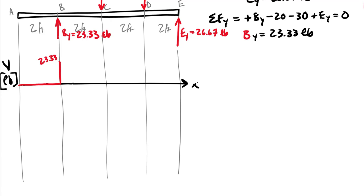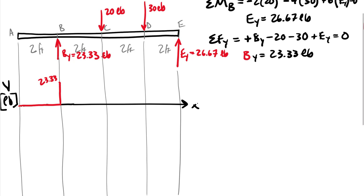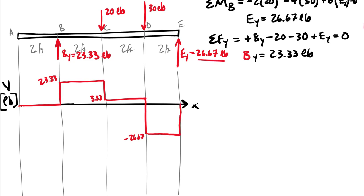No change between B and C — shear remains at 23.33. Then we hit the 20-pound downward force at C, dropping to 3.33 pounds. No change between C and D, then the 30-pound force drops the shear to negative 26.67. No change between D and E, and then the upward reaction of 26.67 at E closes the diagram back to zero.